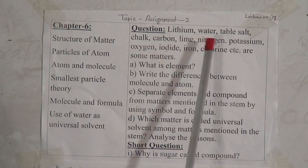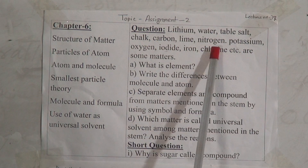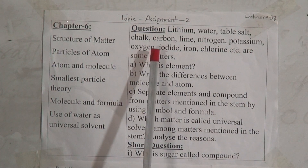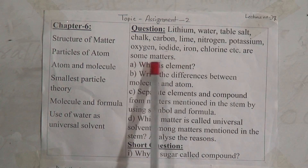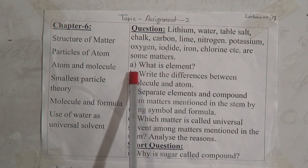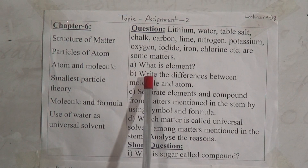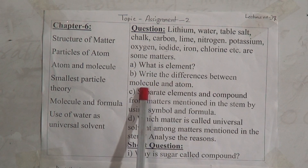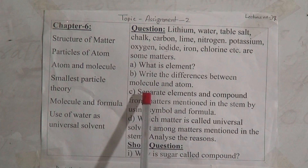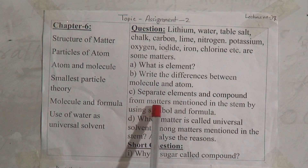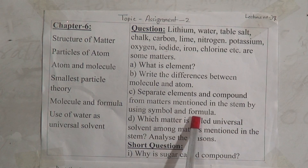The question listed these matters: Lithium, Water, Chalk, Carbon, Lime, Nitrogen, Potassium, Oxygen, Iron, Chlorine, etc. Question A was: What is element? Question B was: Write the differences between molecule and atom. Question C was: Separate elements and compounds from the matters mentioned in the stem by using symbol and formula.